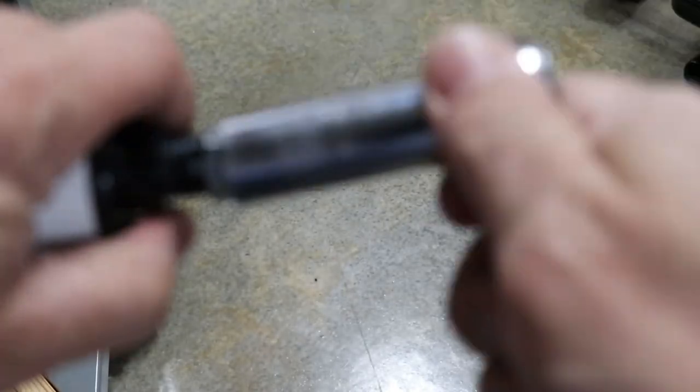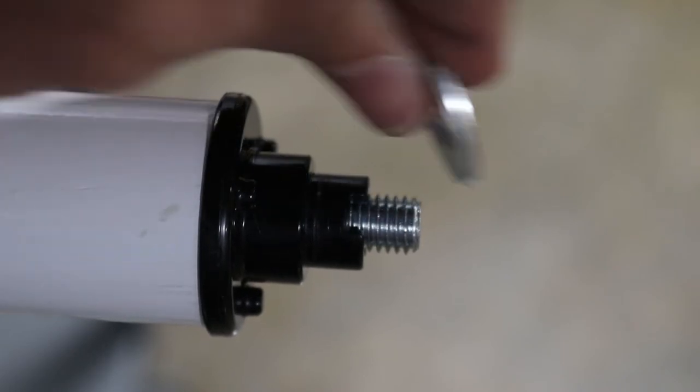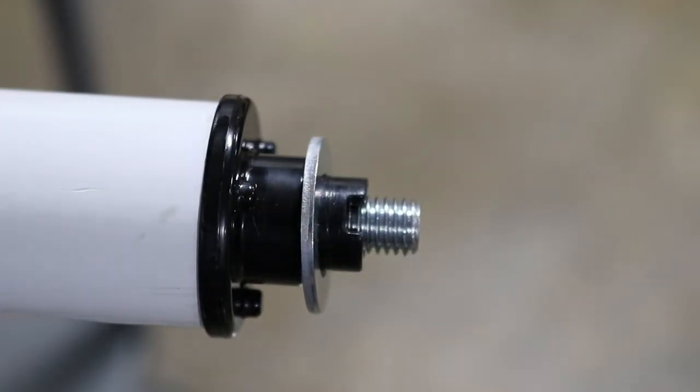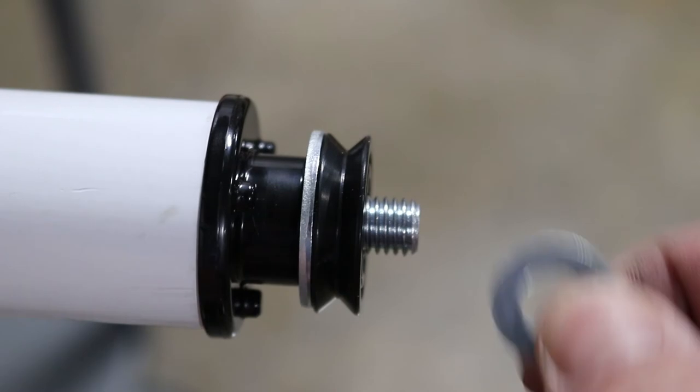Now you'll need to loosen the nut. Take it off. Now place the large washer, then the grooved wheel, then the smaller washer.